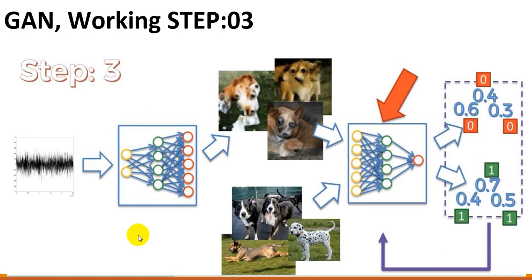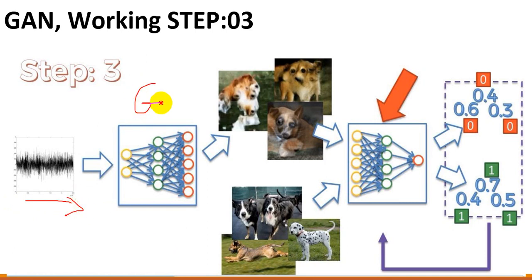As we know, in GAN the whole process is generated from a random noise. We give this random noise as an input to the generator, and after this we create some images from the generator. This is what we talked about in the previous session. The images created from the generator — we also take some batches from the real data input, and both the real data images and the generator images are given as input to the discriminator.